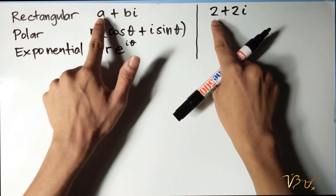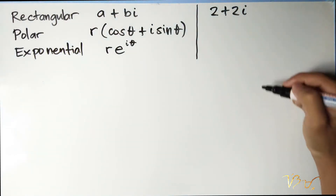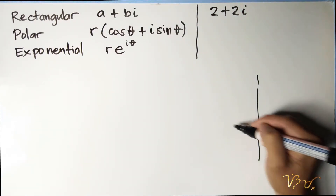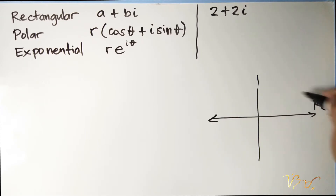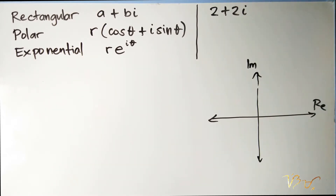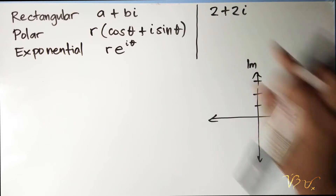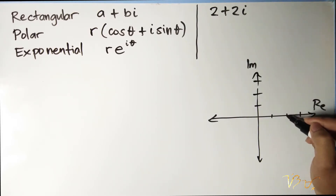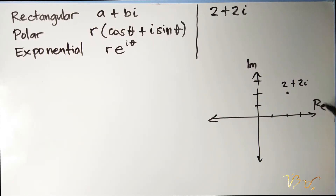By correspondence, we can say that a is equal to 2 and b is equal to 2 as well. Let's try to plot this in the Argand diagram. We have here your real axis and your imaginary axis. Your real part is equal to 2 and your imaginary part is equal to 2i. So our complex number is here: 2 plus 2i.